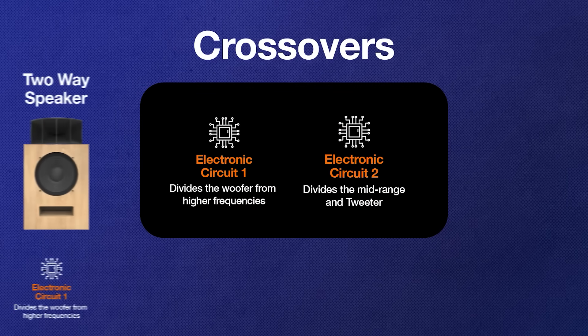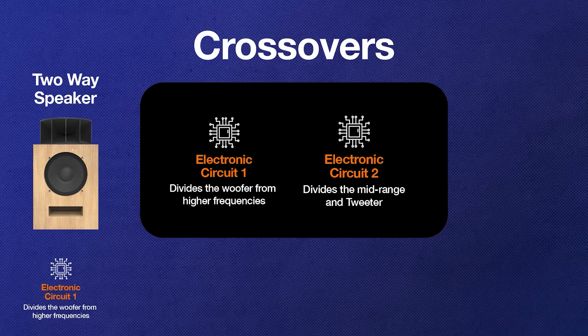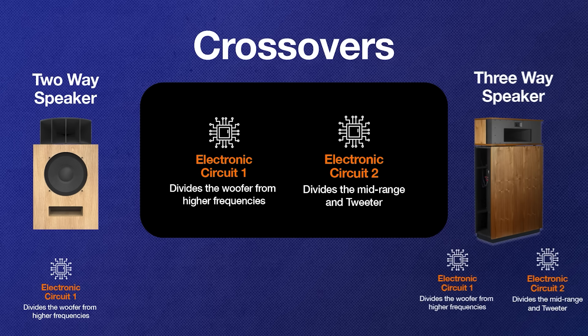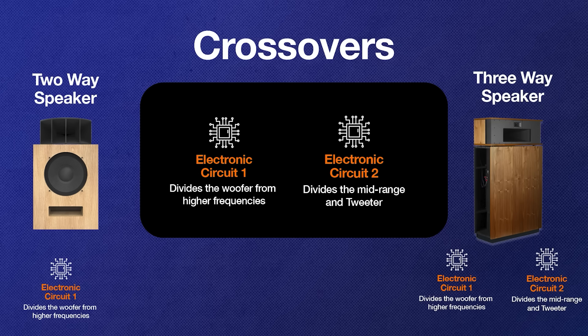In the case of a two-way speaker you only need one piece of circuitry because that says everything below 1000 hertz goes to the woofer everything above 1000 hertz goes to the tweeter. So therefore a two-way speaker has only one crossover.